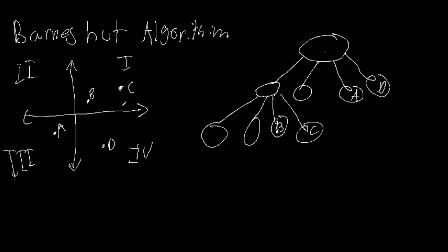Let me draw this out. We subdivide quadrant 1 further using a grid to determine the location of particles in the tree nodes. Particle B is in the third sub-quadrant and particle C is in the fourth sub-quadrant. The Barnes-Hut algorithm uses this tree to calculate the force of attraction between particles more efficiently.